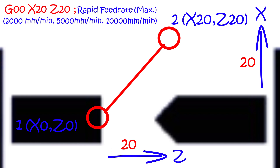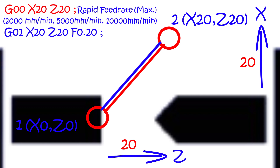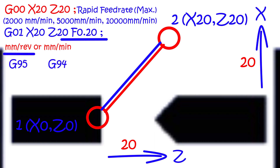According to the second method, we will program a block: G01, X20, Z20, F0.20, semicolon. With this block, the controller will give a command to move the tool linearly to coordinate position 20,20 with the feed rate defined by the programmer in the same block. Feed units can be mm per revolution or mm per minute depending upon the code given in the program headers — that is G95 for mm per revolution and G94 for mm per minute in the case of Siemens controller.